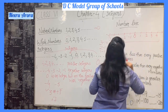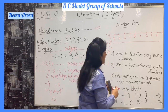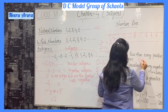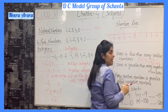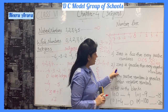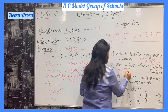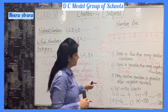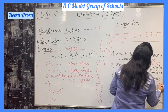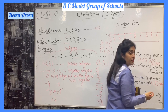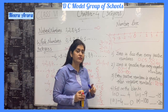What we need to keep in mind about integers: first, 0 is less than every positive number — for example, 0 is less than 5, 0 is less than 50. Second, 0 is greater than every negative number — for example, 0 is greater than minus 1, 0 is greater than minus 100. Third, every positive number is always greater than every negative number, whatever the numbers are.